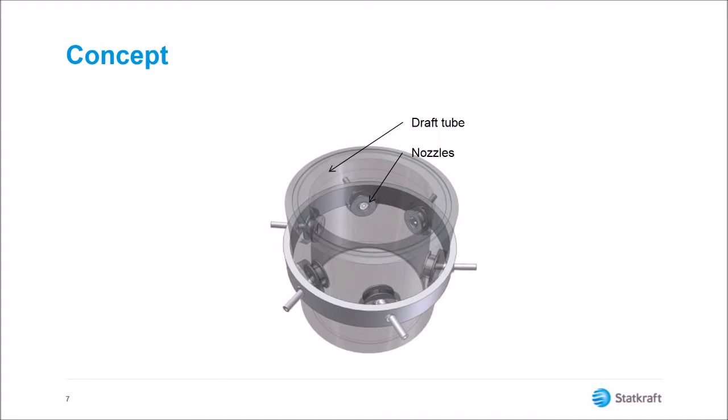The idea of the injection system is, as the name implies, to inject water in the opposite direction of the spin. This reduces the rotational energy and improves the flow through the draft tube. Ultimately, this should hinder the birth of heavy part load pressure pulsations.